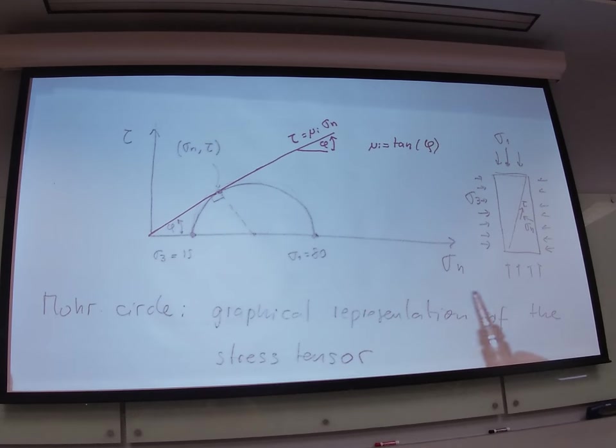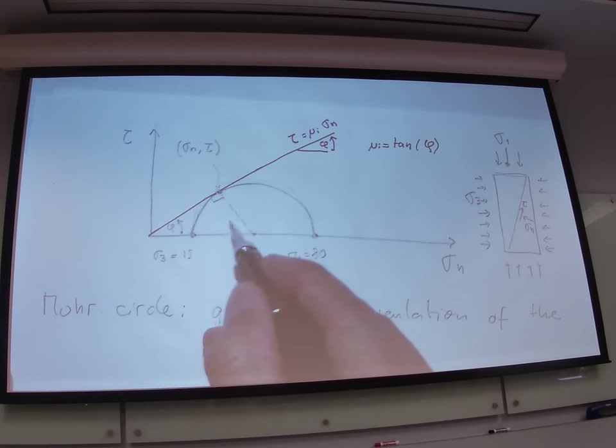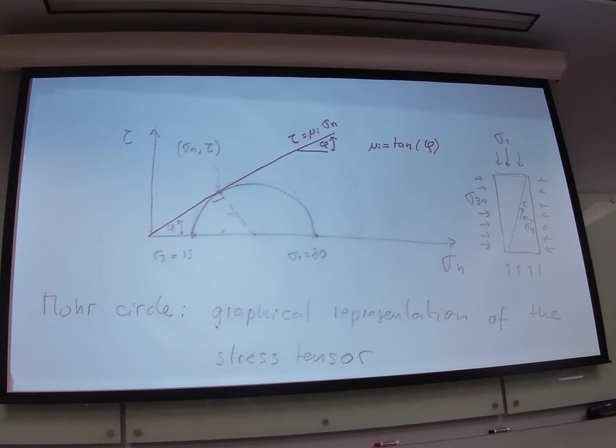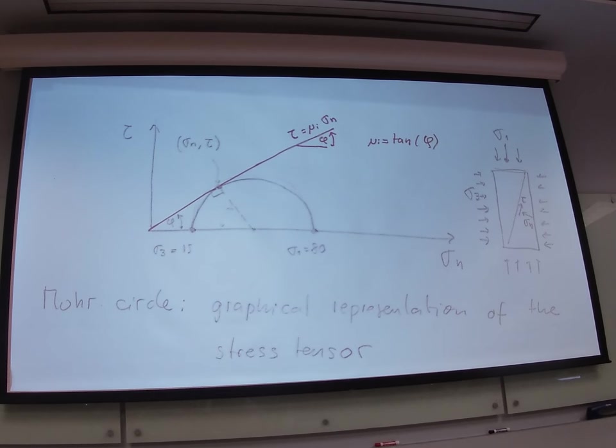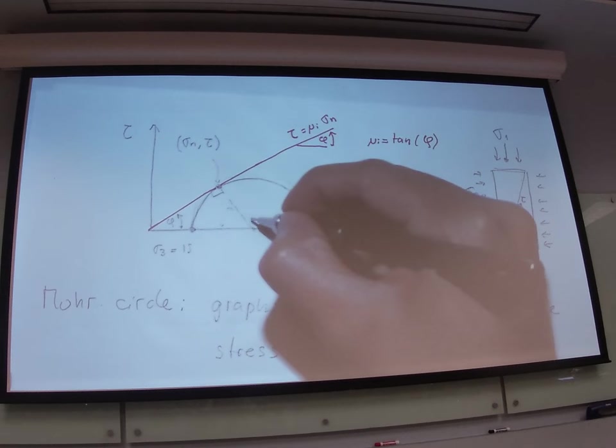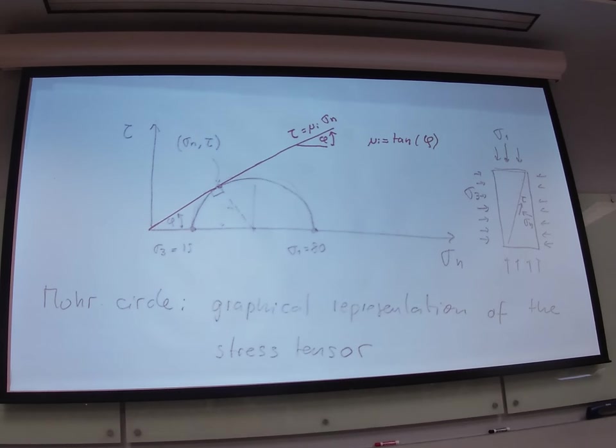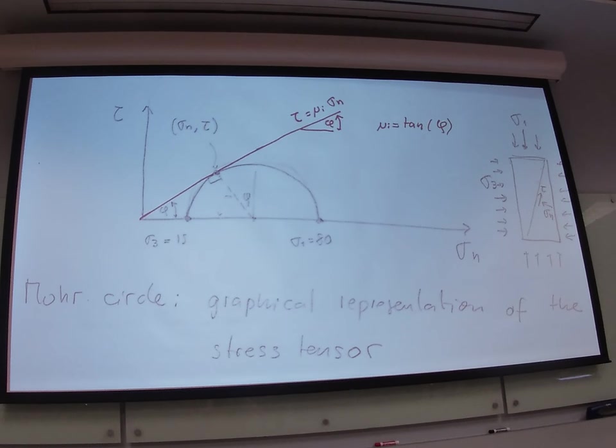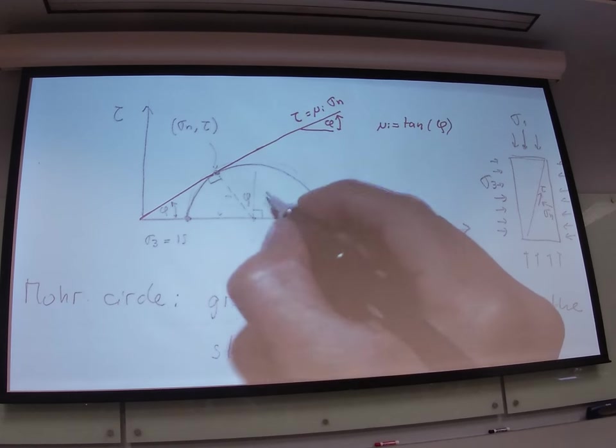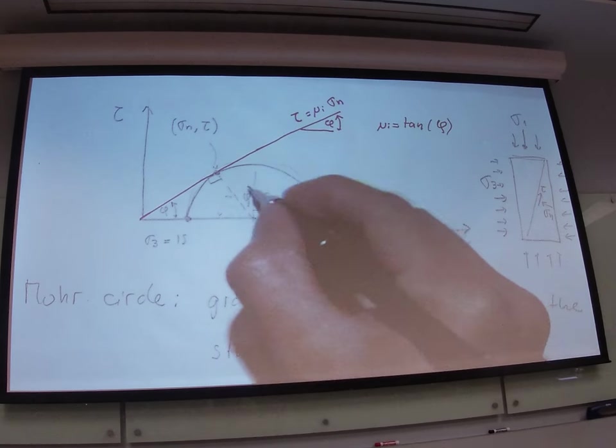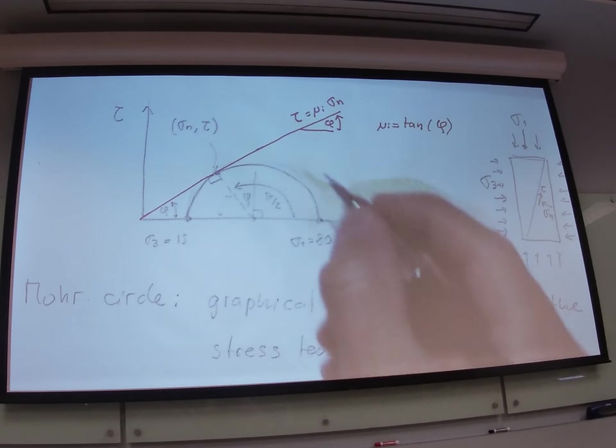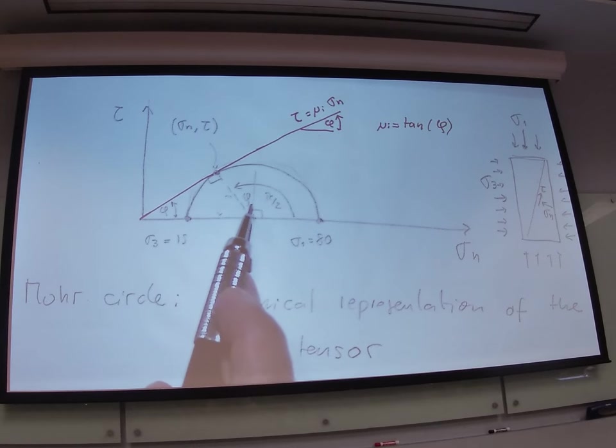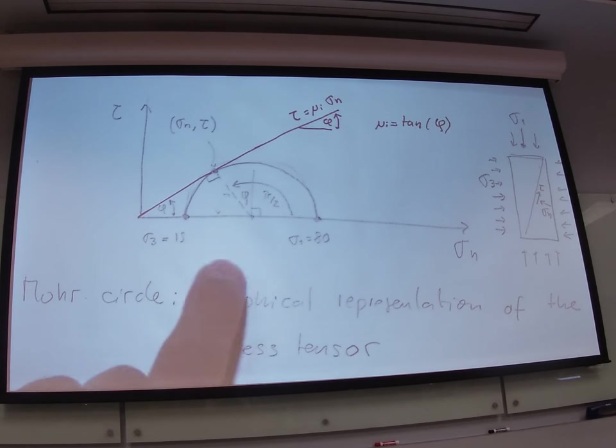you will notice that because this is a circle and this is a tangent line this is the right angle so 90 degrees. Therefore this angle, how much is going to be this angle over here? 90 minus phi. And if that's 90 minus phi what is going to be that angle over here? Phi. That's going to be phi. And because this is a right angle, I'm going to find this point at friction angle plus 90 degrees from that point.